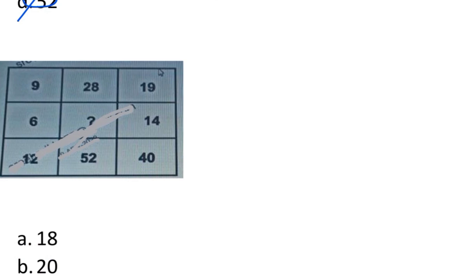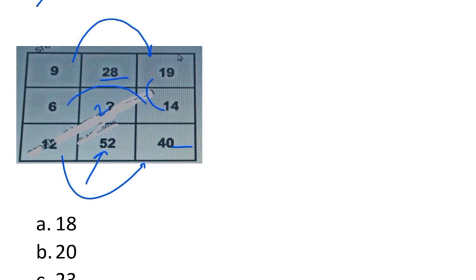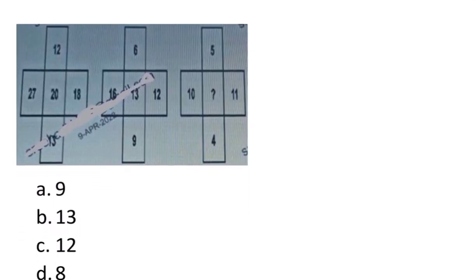Next question — this is a good question, either 2 or 3 marks. We have 9, 6, and 12. We check subtraction: 19 minus 14 is 5, into 6 is 30, but there is 40 so that doesn't work. This is a direct question: 19+9 = 28, 12+40 = 52, and 14+6 = 20. So the answer is 20.